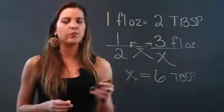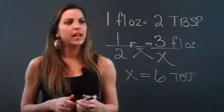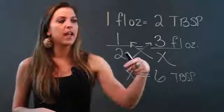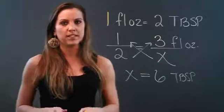So the way to do fluid ounce to tablespoon conversion is by setting up the ratio 1 to 2, 1 fluid ounce for every 2 tablespoons, and then creating a proportion and solving it.